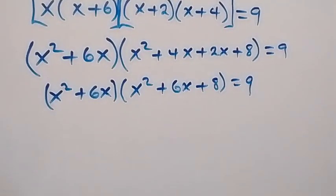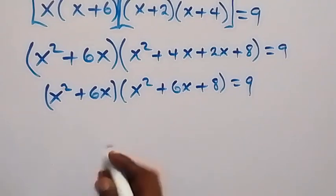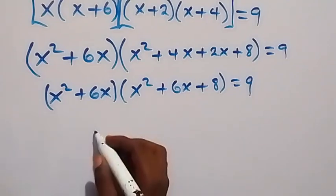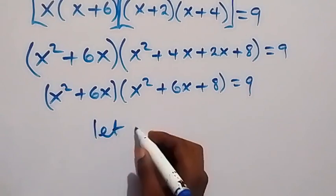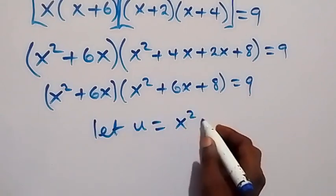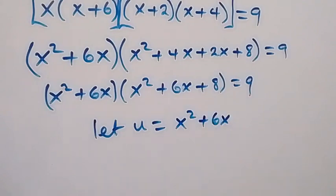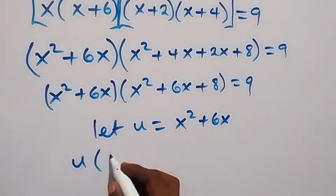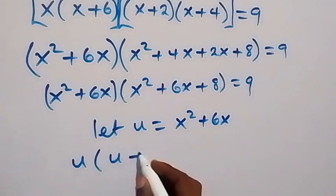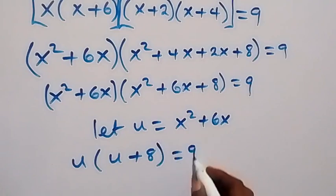Then, when we look at this, we have something common which is x squared plus 6x, so we can let it represent that. Let u be equal to x squared plus 6x. From here, this will become u into bracket u plus 8, then equals to 9.